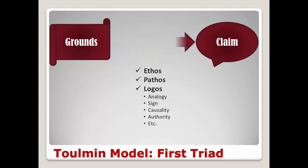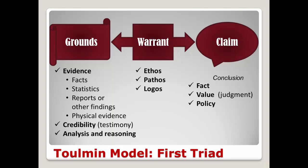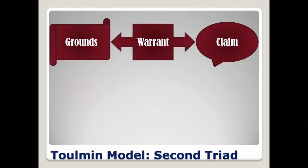Now, we don't always say the claim first and then offer the grounds. Sometimes we state the grounds first, such as Rennick is a service dog, and then connect to the claim — so you know he's friendly. Regardless, the warrant connects the claim to the grounds. So that's the first triad. Let's move on to the second, which involves three additional elements to supplement or support the first triad.